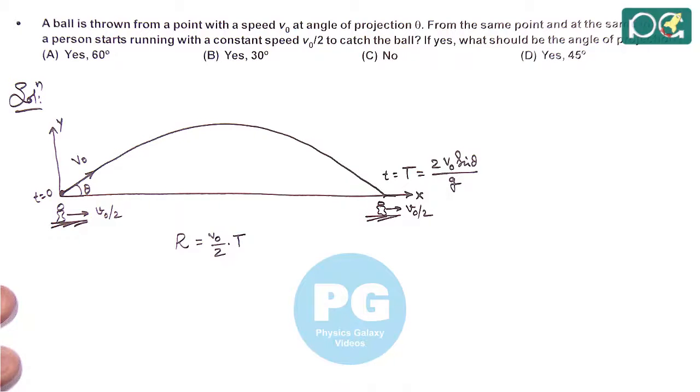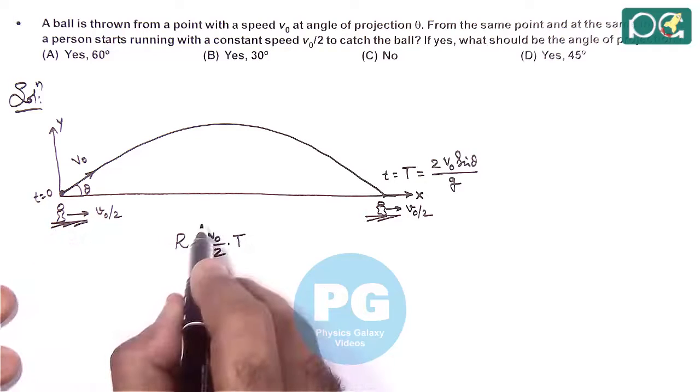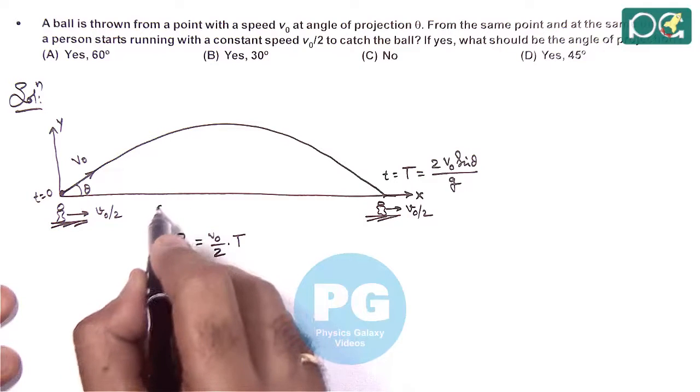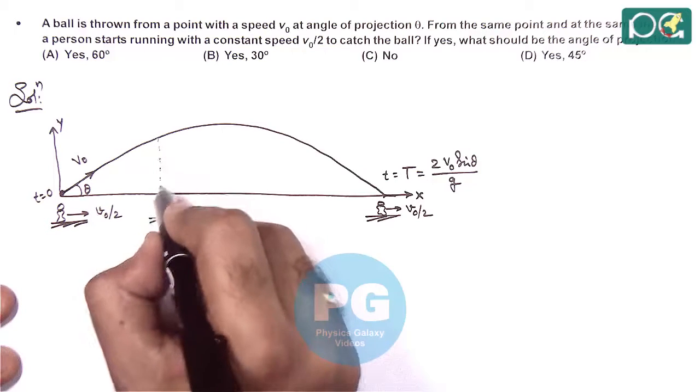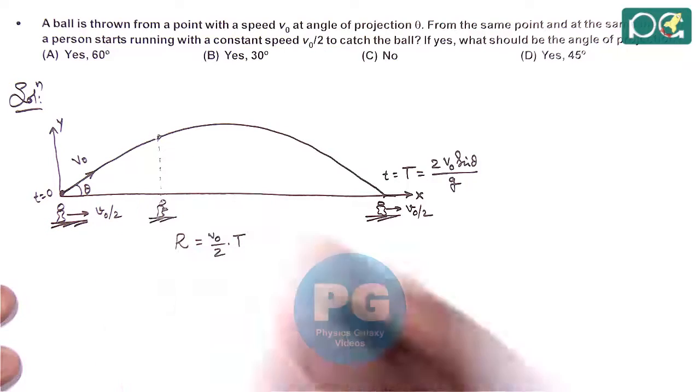So one way of obtaining the result is, if during run, at any point when the boy is located here, if the ball is exactly above him, then we can say